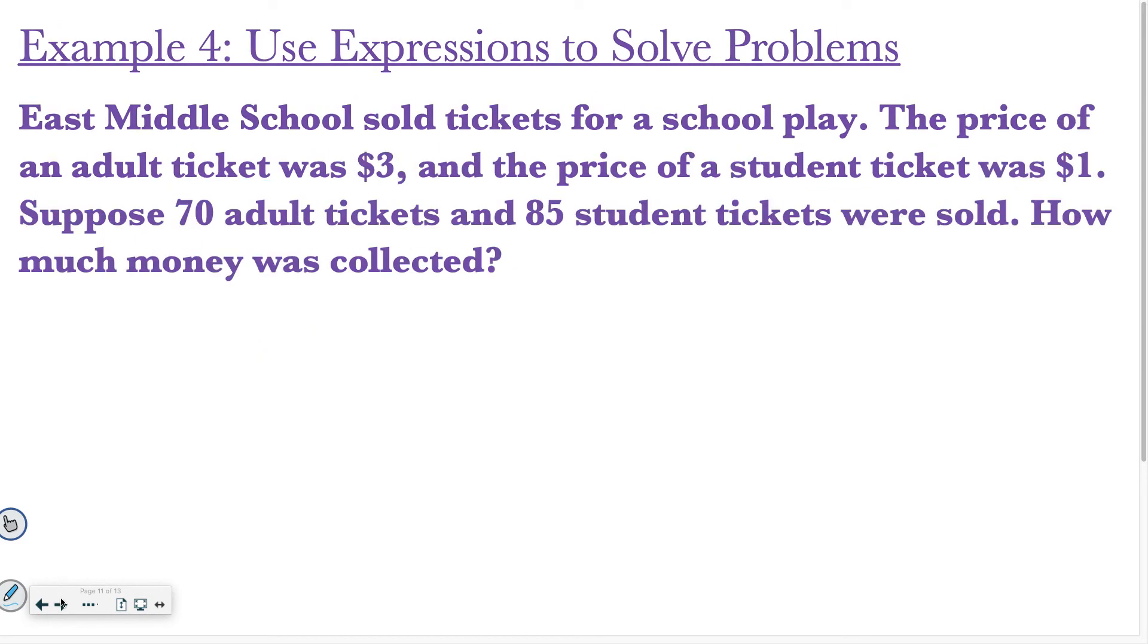But then this next page, I'm going to take that information. So this was our expression from the last slide. And now I want to say suppose 70 adult tickets, so 70 adult tickets and 85 student tickets were sold. How much money was collected? So I'd say 3 times 70, because there were 70 adults, plus 1 times 85 for the students. So 3 times 70 is 210, plus 1 times 85 is 85. And then I add those two together to find out that the grand total was $295 earned for the play.